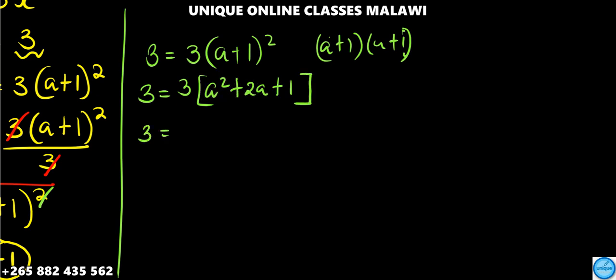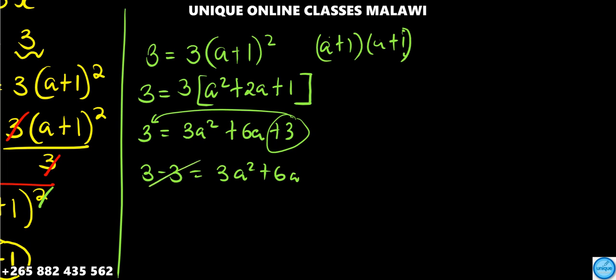It'll be 3 is equal to 3a squared plus 6a plus 3. Then we can get 3 minus 3 is equal to 3a squared plus 6a. This is 0, so we have 0 is equal to 3a squared plus 6a.